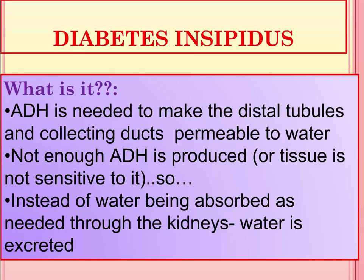Mellitus actually means sweet, and insipidus means tasteless. There was a point in time where lab technicians would actually have to taste the urine to determine if there was sugar in it, because polyuria was one of the diagnostic presentations. If there was sugar in the urine, it was diabetes mellitus, and if it wasn't, then it was tasteless, or insipidus.